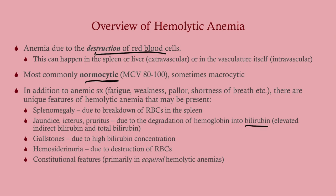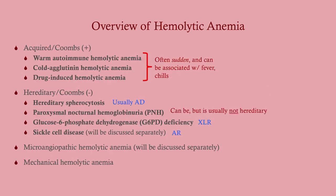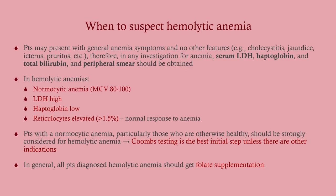I like to divide hemolytic anemias into Coombs-positive and Coombs-negative rather than intravascular and extravascular, because when you have a patient with hemolytic anemia you're almost always going to order a Coombs test. That breaks it up and gives you a general idea of what you're dealing with, especially when combined with the clinical history.